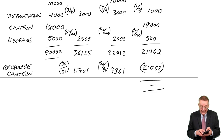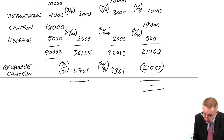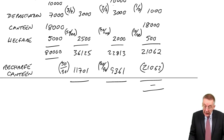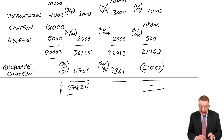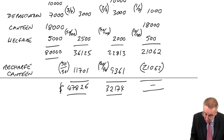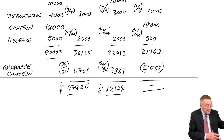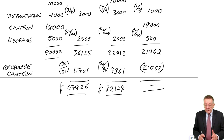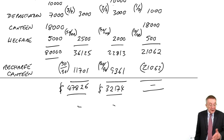Does it add up? 11,701 and 9,361 — yes it does. So the total overhead for the production departments is: processing 47,826 and packing 32,174. And of course that should give us in total 80,000, and it does. Now having done that, think back to example two. If we have the information, we'd now look at how many hours there were in each department and work out an absorption rate for each of the production departments.